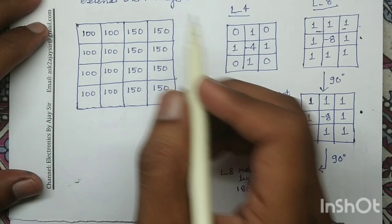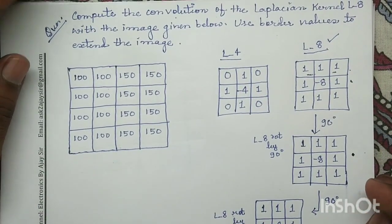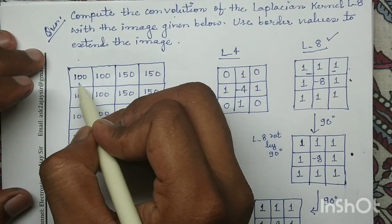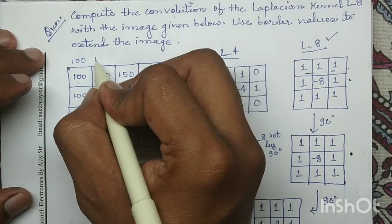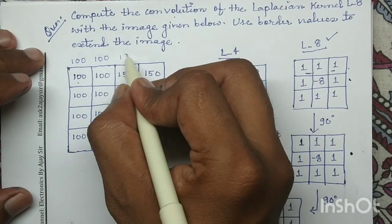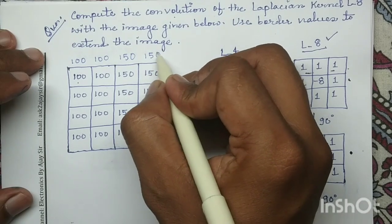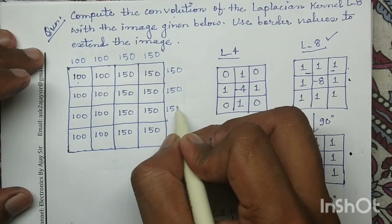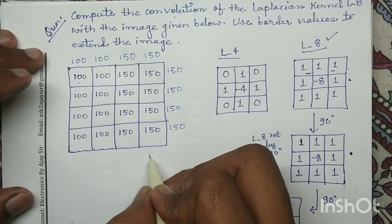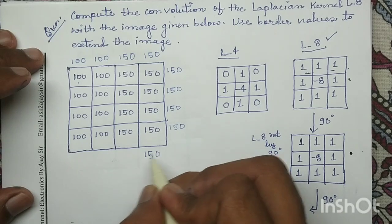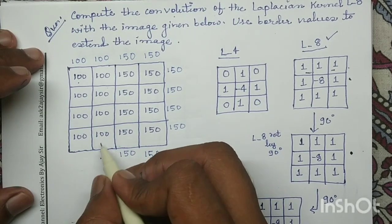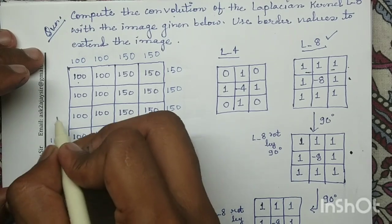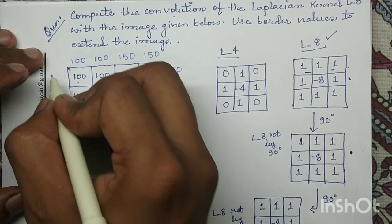Another thing mentioned here is to use border values to extend the image. In order to extend this image, at this position the border value is 100, so I will write 100. At the next position the border value is 150, so I will write 150. Similarly, I will fill in all the border extension values — 150 continuing around the edges, and 100 where the border pixel is 100.